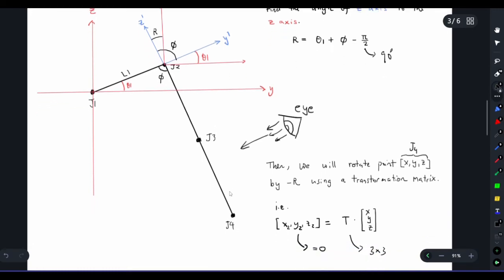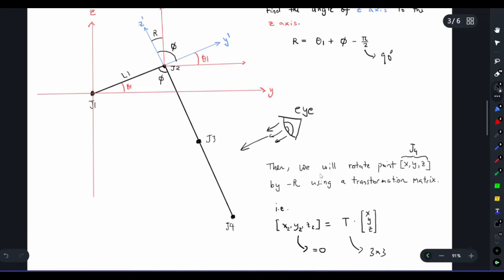We will rotate the point x, y, z or j4 by negative r using a transformation matrix or rotation matrix. In this case t is a rotation matrix which is a 3x3 matrix consisting of zeros and ones and sine cosines of r. I will show you the details of the transformation matrix when we implement this in the code.